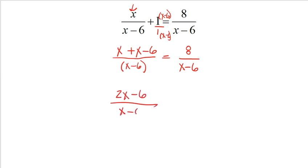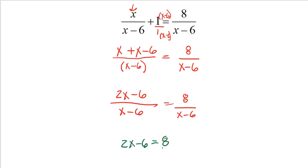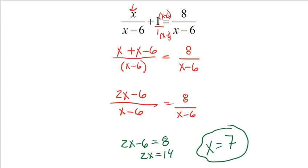The x's are combined and I notice that my denominators are the same — this is awesome. Because my denominators are the same, the numerators have to be the same. So I can focus on the numerators only: 2x minus 6 equals 8. Add the 6, get 2x equals 14. Divide by 2, x equals 7. Done, nice and simple.